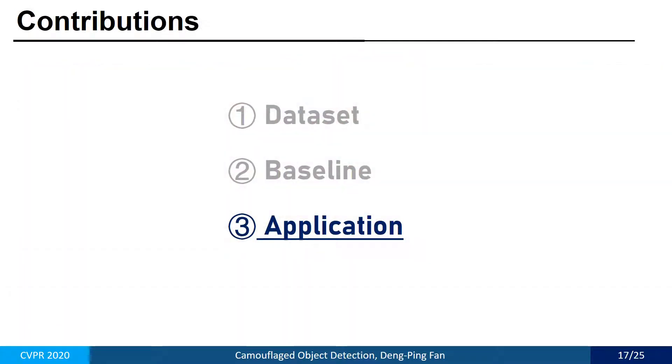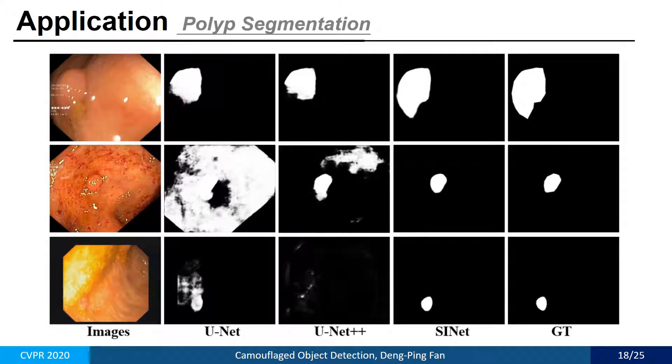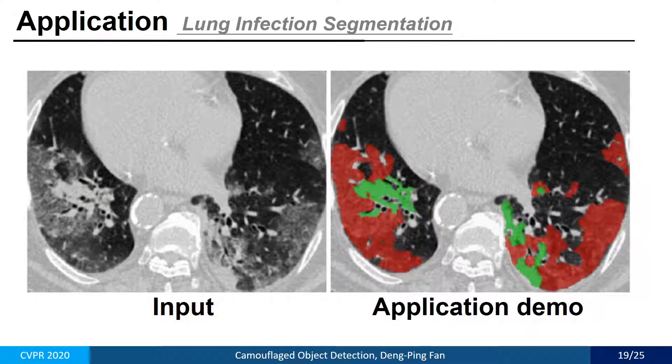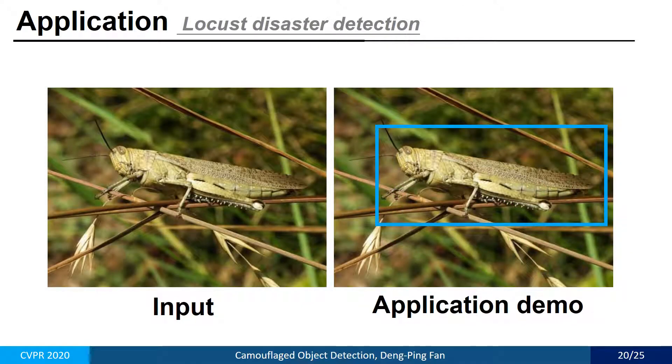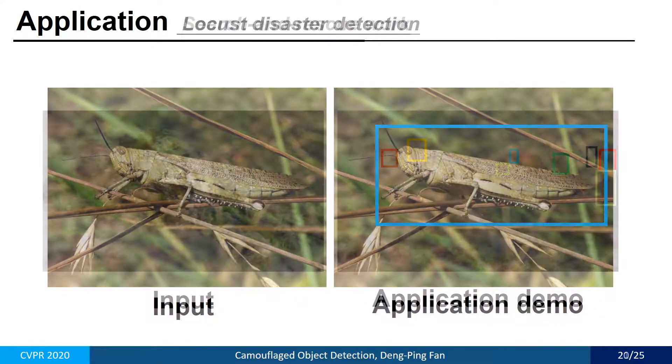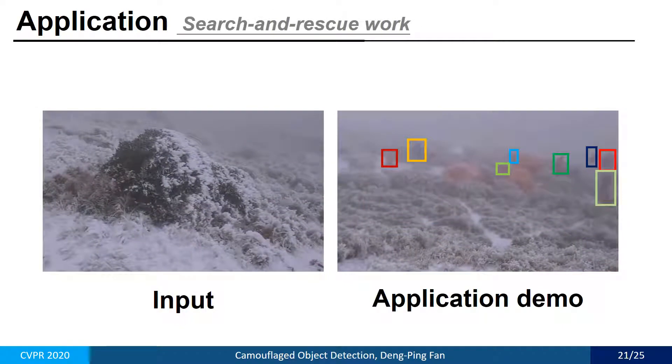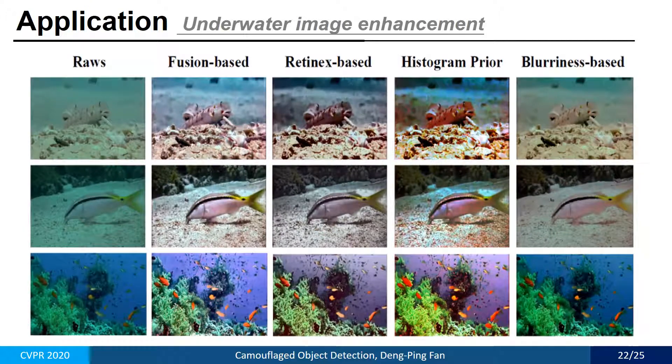Next, I will provide some potential applications, such as in the medical image field for polyp segmentation, for lung infection segmentation, locust detection for preventing locust disaster, search and rescue work for searching people, and underwater image enhancement.